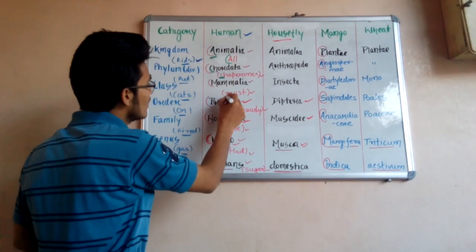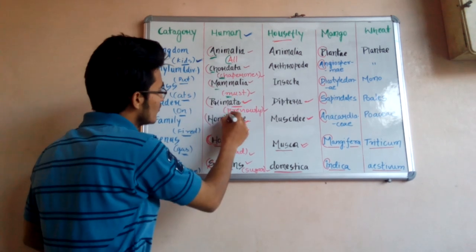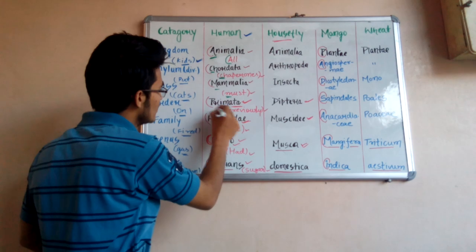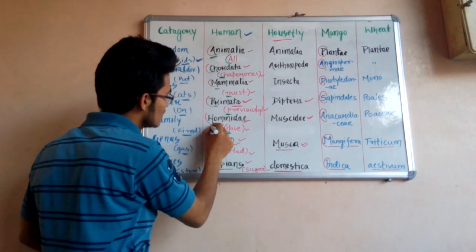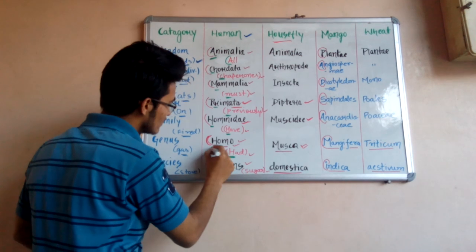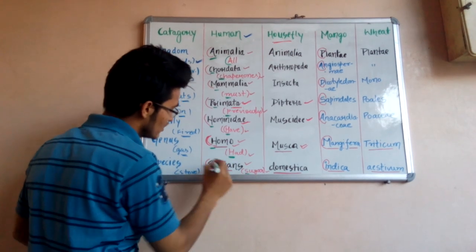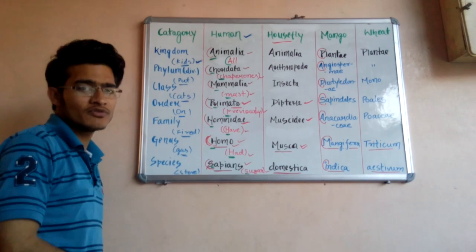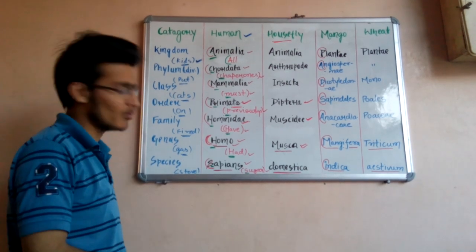'Chaperons' — C stands for Chordata. 'Must' — M stands for Mammalia. 'Previously' — P stands for Primata. 'Have' — H stands for Hominidae. 'Had' — H stands for Homo. 'Sugar' — S stands for Sapiens. So Homo sapiens is the scientific name of human beings, written in accordance with binomial nomenclature.